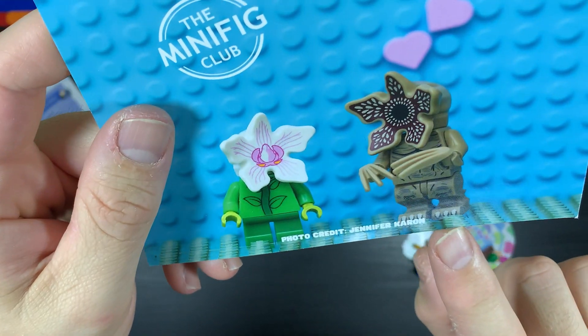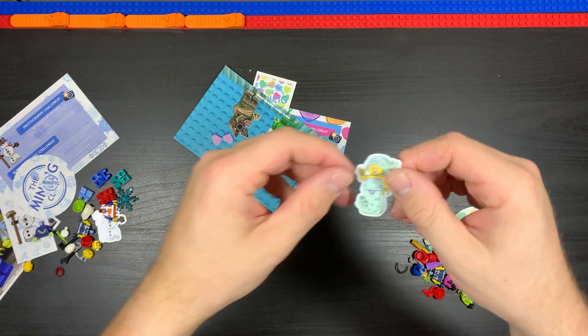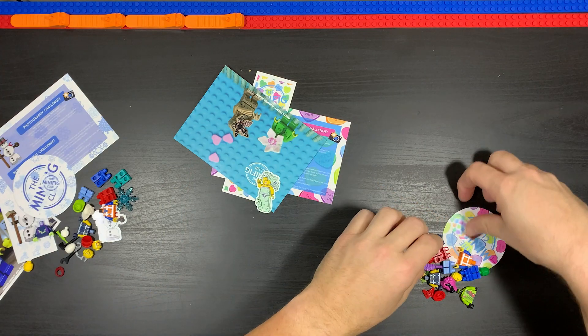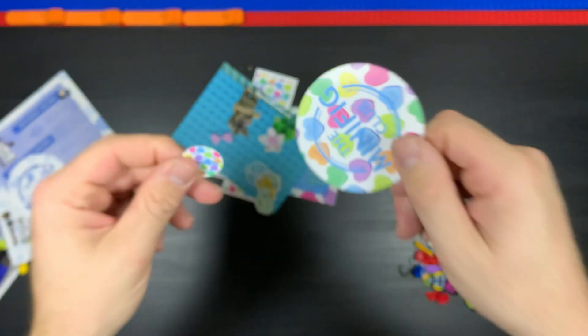We get ourselves a nice little magnet, we got a mermaid. Then they give us a big sticker and a small sticker, just like before.